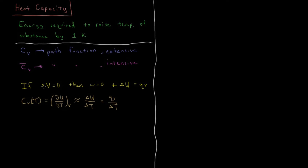Alternatively, what if instead of having a constant volume process, we have a constant pressure process? If ΔP equals zero, then the work done during that process is going to equal P ΔV. The change in enthalpy, ΔH, is going to be the constant pressure heat absorbed or released by the system. So instead of having CV, the constant volume heat capacity, for a process like this, we will have CP, the constant pressure heat capacity.